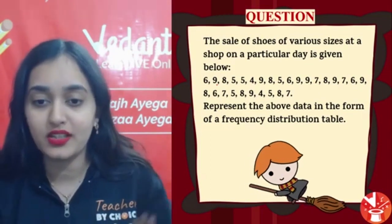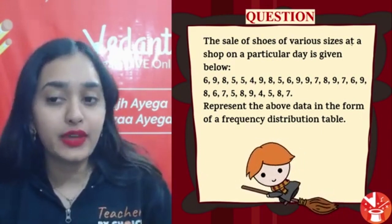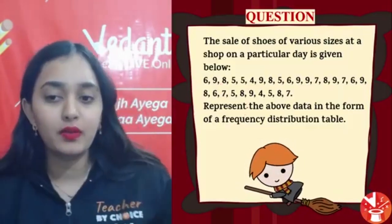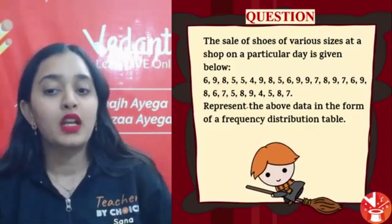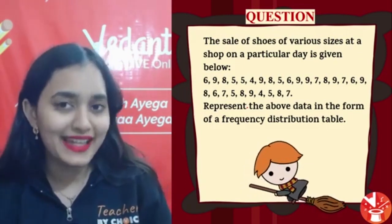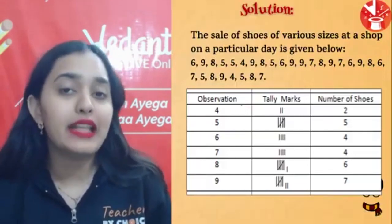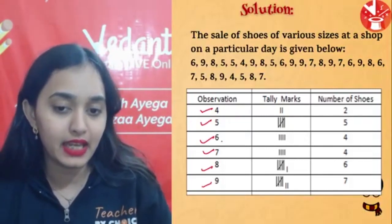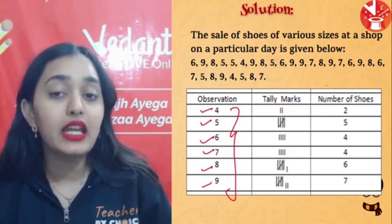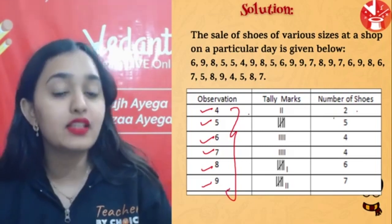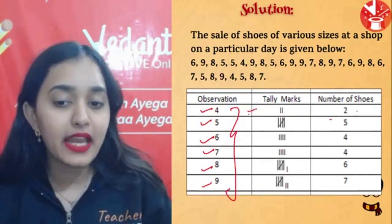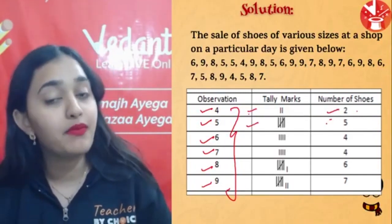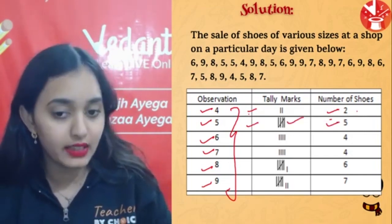Next question: Sale of shoes of various sizes at a shop on a particular day is given — represent the data in the form of a frequency distribution table. Shoe sizes are 4, 5, 6, 7, 8, 9. Size 4 — 2 shoes sold; size 5 — 5 shoes sold; size 6 and onwards we draw the tally accordingly.